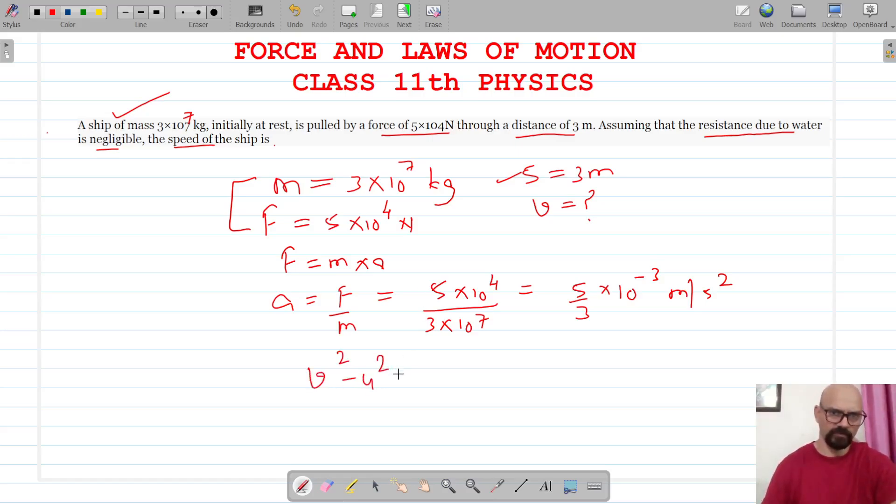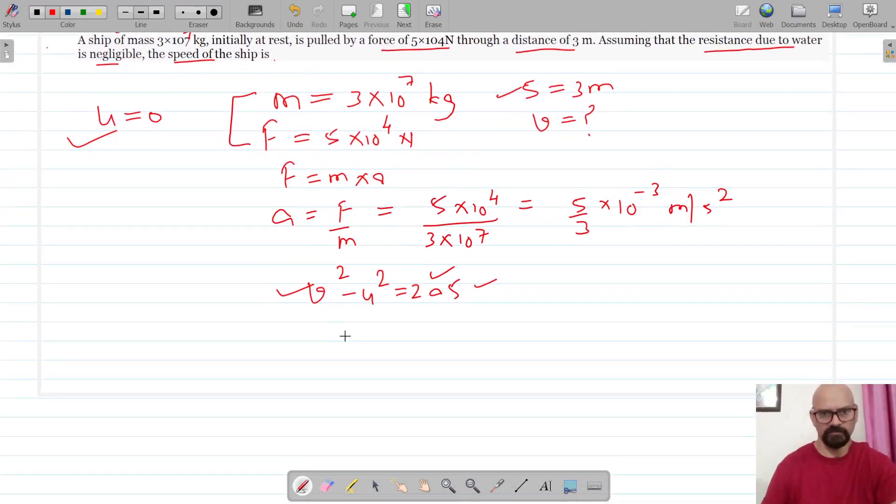We are using this equation because we have to find the velocity. Initially the ship is at rest, so the initial velocity u = 0. We know the acceleration and we know the distance, so we will calculate v.